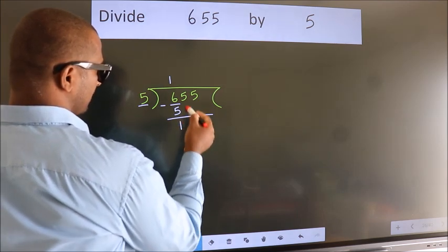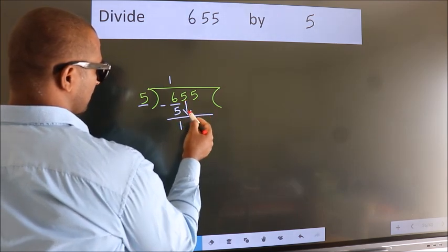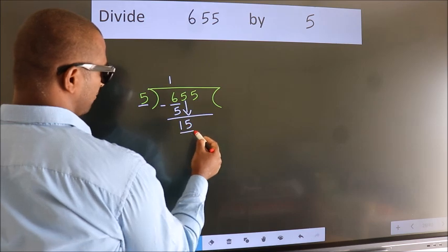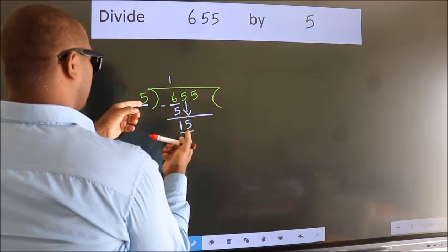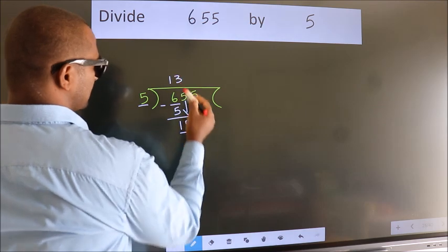After this, bring down the beside number. So 5 down, making 15. When do we get 15 in the 5 table? 5 threes, 15.